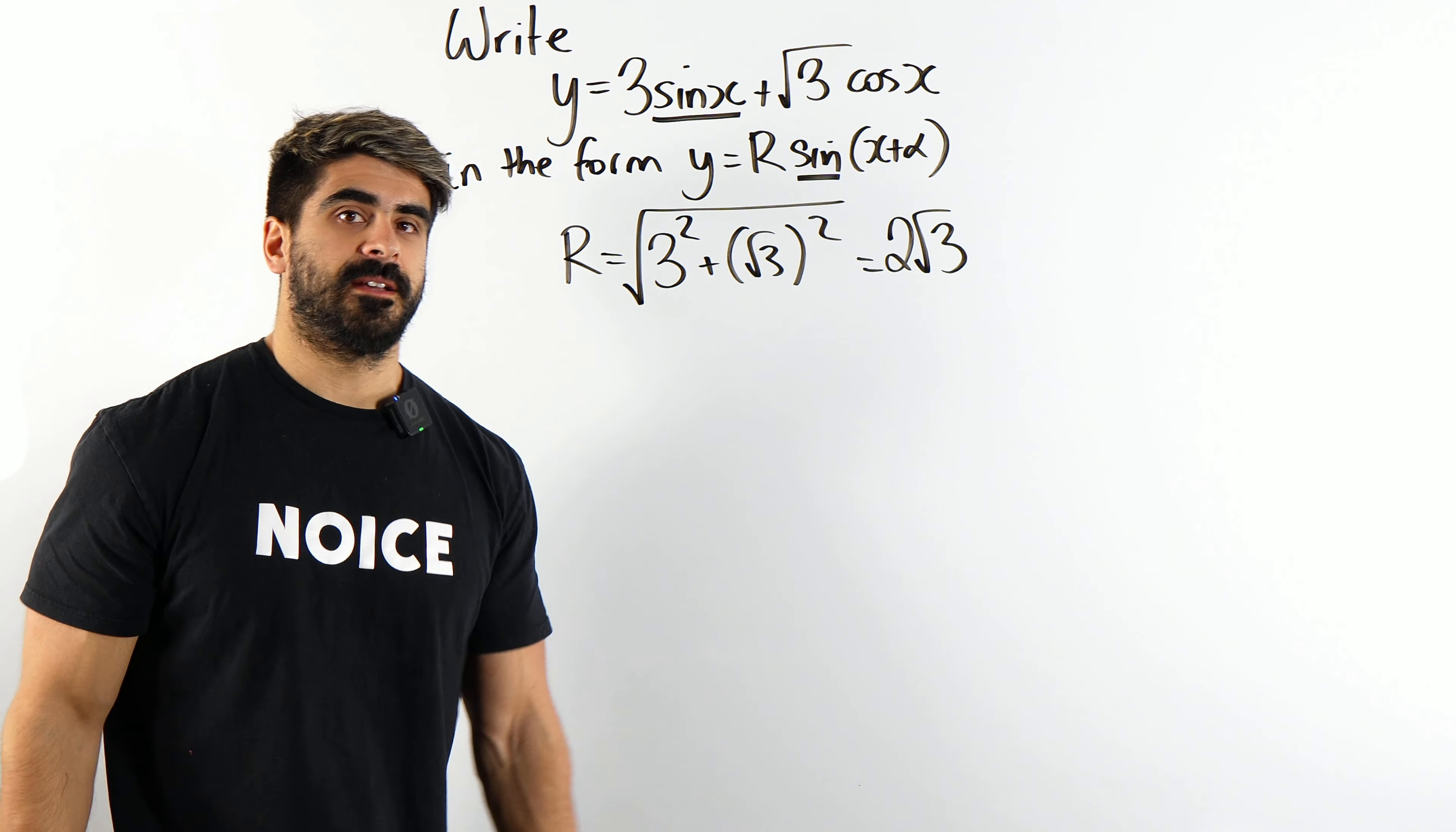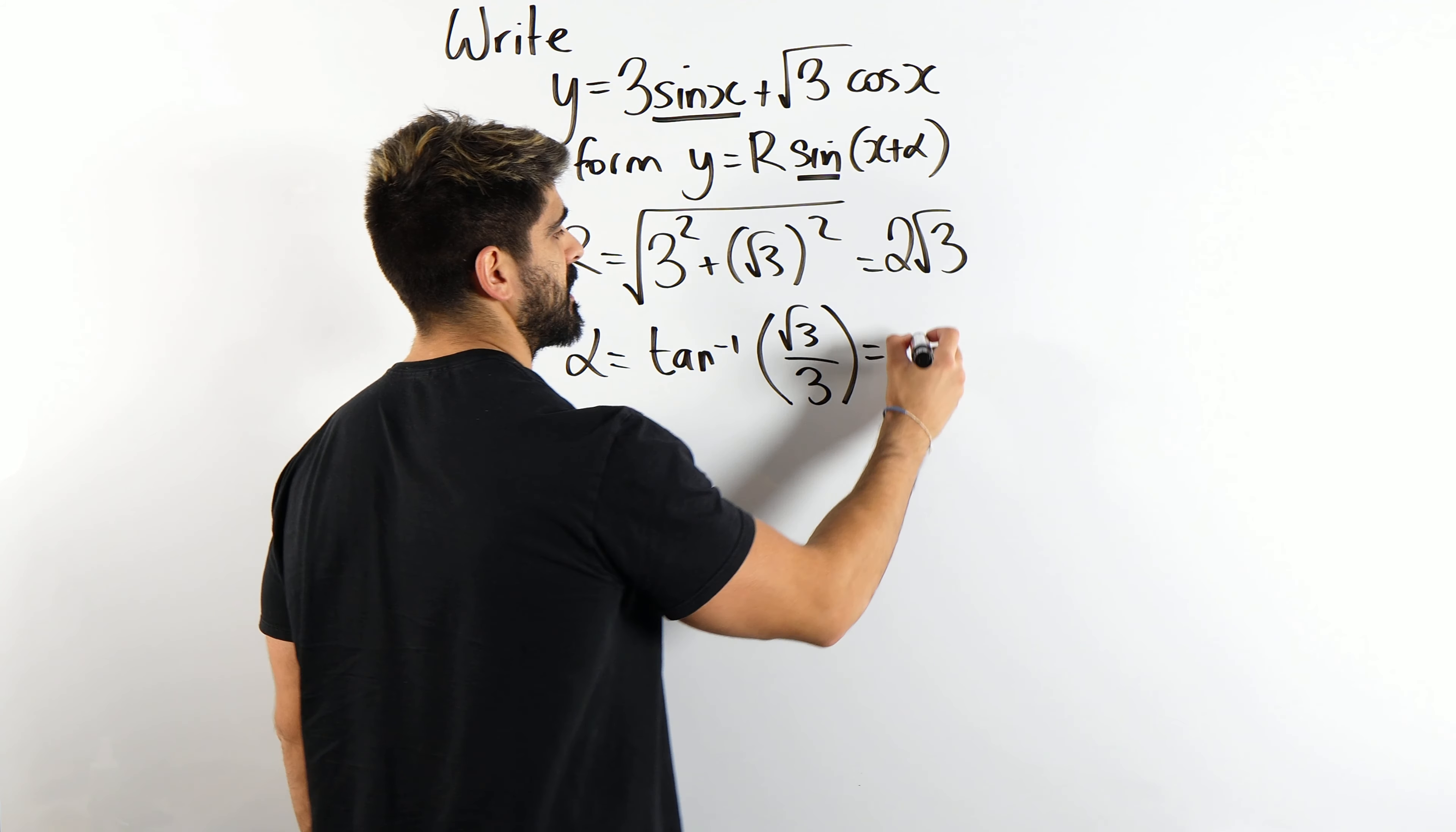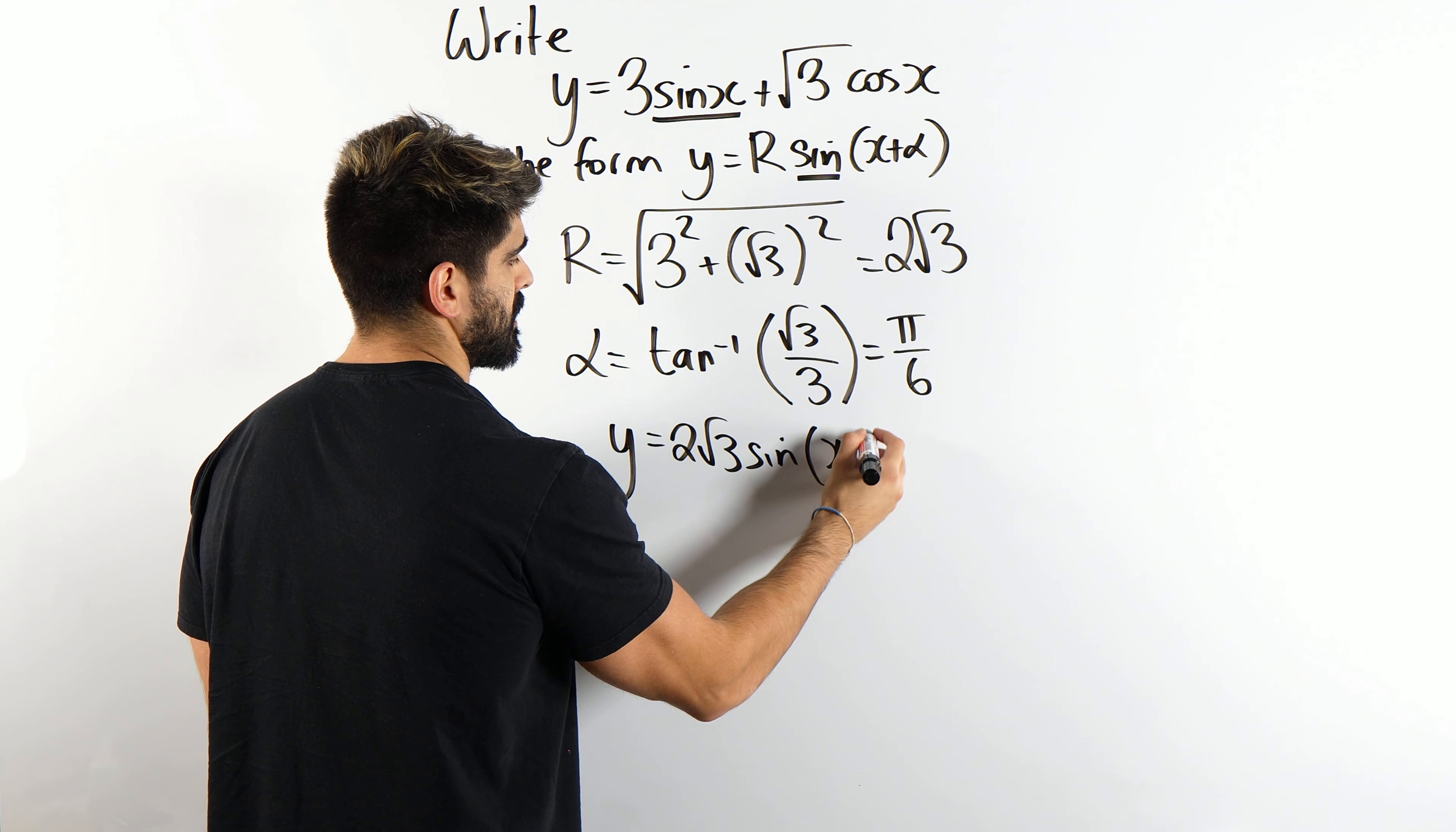Now here's the best bit. How do you find alpha? You do inverse tan of the second number root 3 divided by the first number 3 which is pi over 6 or 30 degrees depending on what the angle is. They'll tell you that in the exam. So here's your answer. y equals 2 root 3 sin x plus pi over 6.